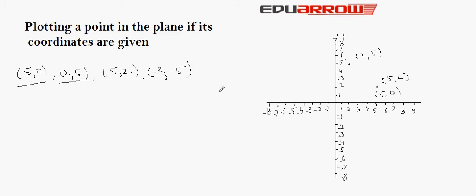Now, we will plot our next point that is (-3, -5). Here, minus 3 is the x coordinate and minus 5 is the y coordinate. First, we will see for x coordinate — minus 3 is here. And for y, minus 5 is perpendicular to the x axis along with the minus y axis — minus 5 is here. So, the point will be plotted as (-3, -5).